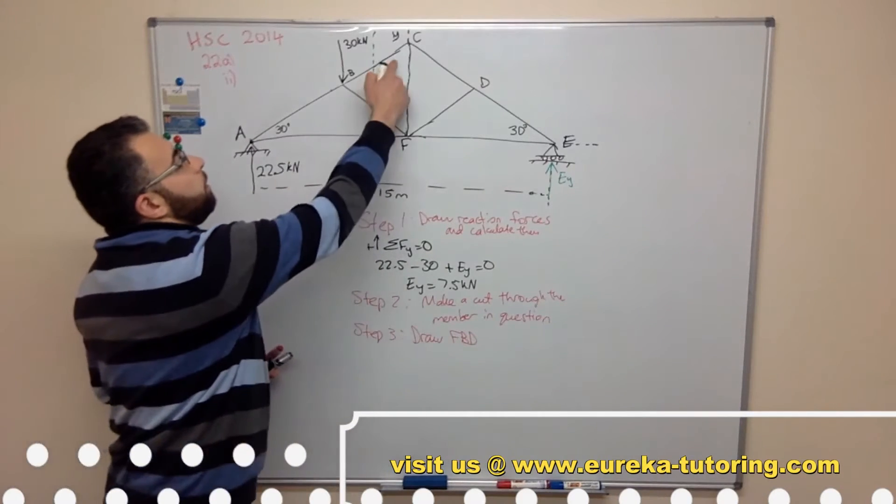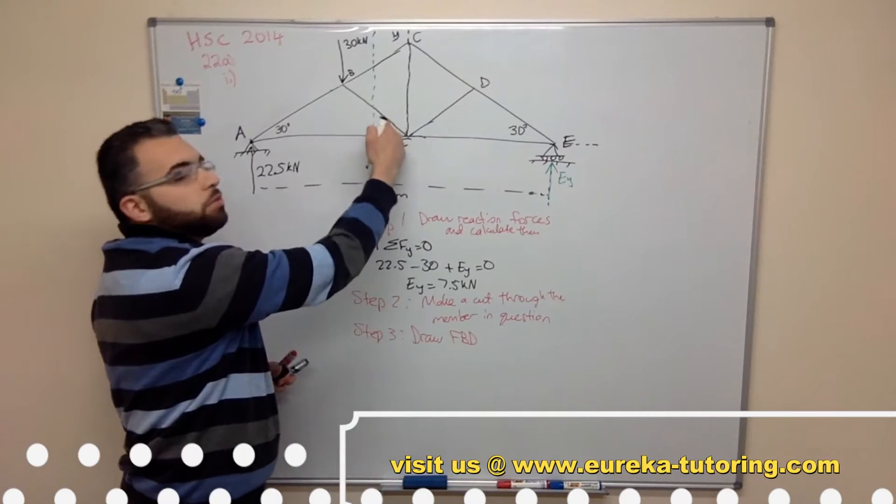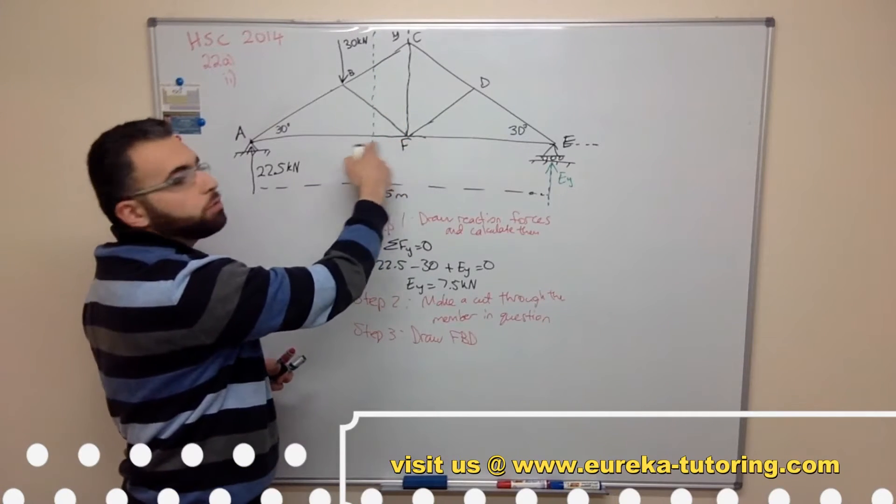So I've cut through here - that's going to be a force here BC. I've cut through here - this will be a force BF, and there will be a force here AF.